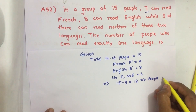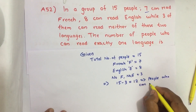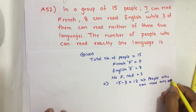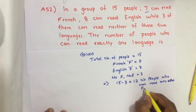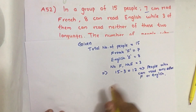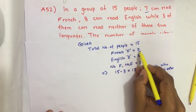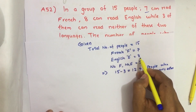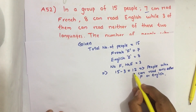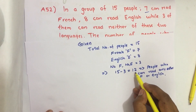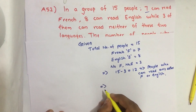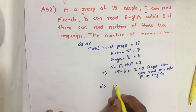This 12 represents people who can read either French or English. The total of French-reading and English-reading people is 7 plus 8 equals 15, but the number who can read at least one of these languages is 12. So that means there are people who can read both French and English.